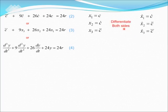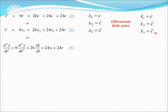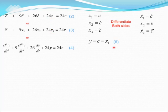By differentiating both sides and making use of the equations to find x1 prime, x2 prime, and x3 prime, the right-hand side of the state variables is also differentiated, becoming c prime, c double prime, and c triple prime. For the output, we get y equals to c equals to x1, named as equation 6. This is the equation for c triple prime taken from the previous slide.